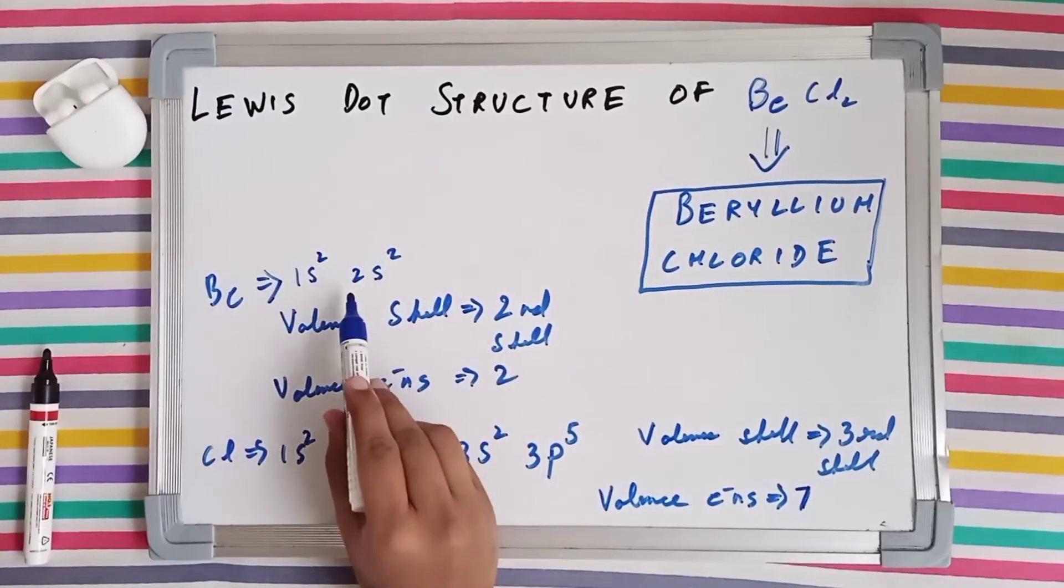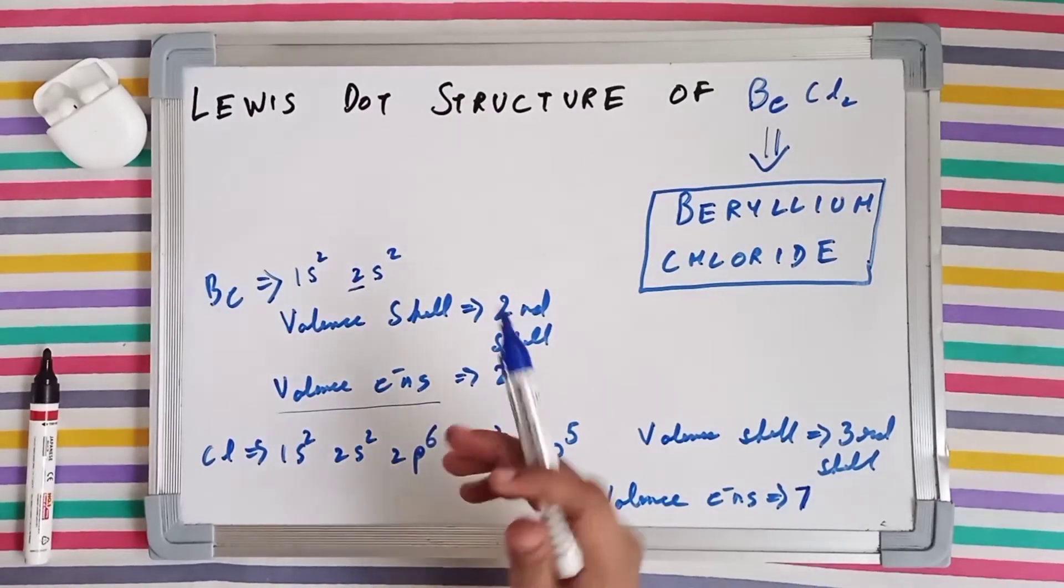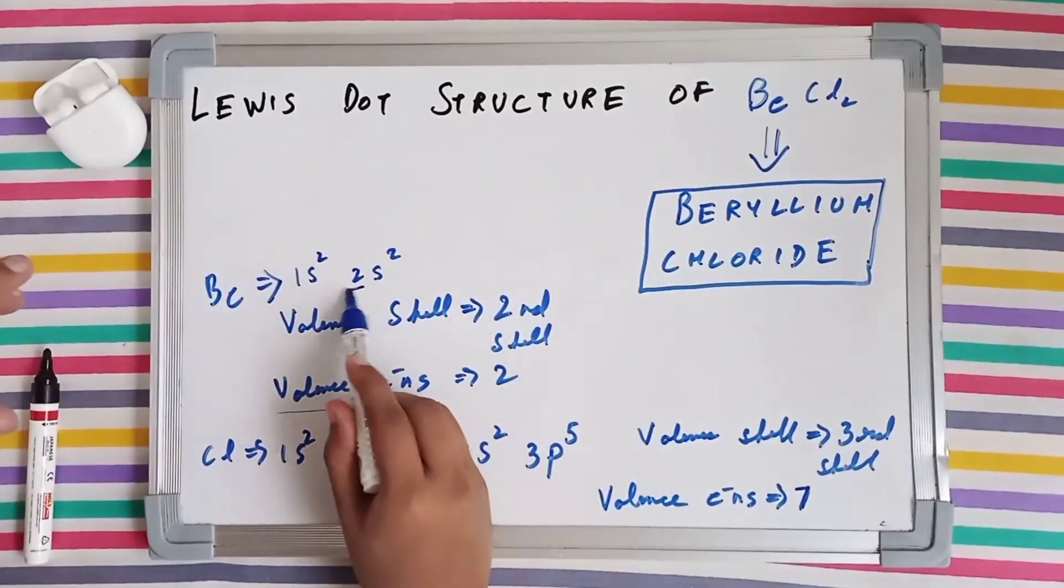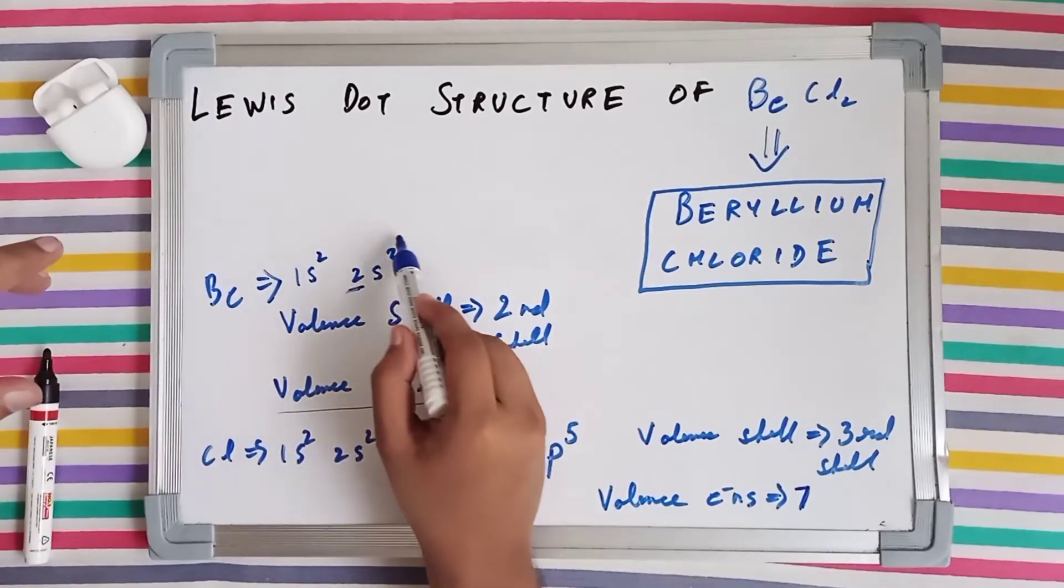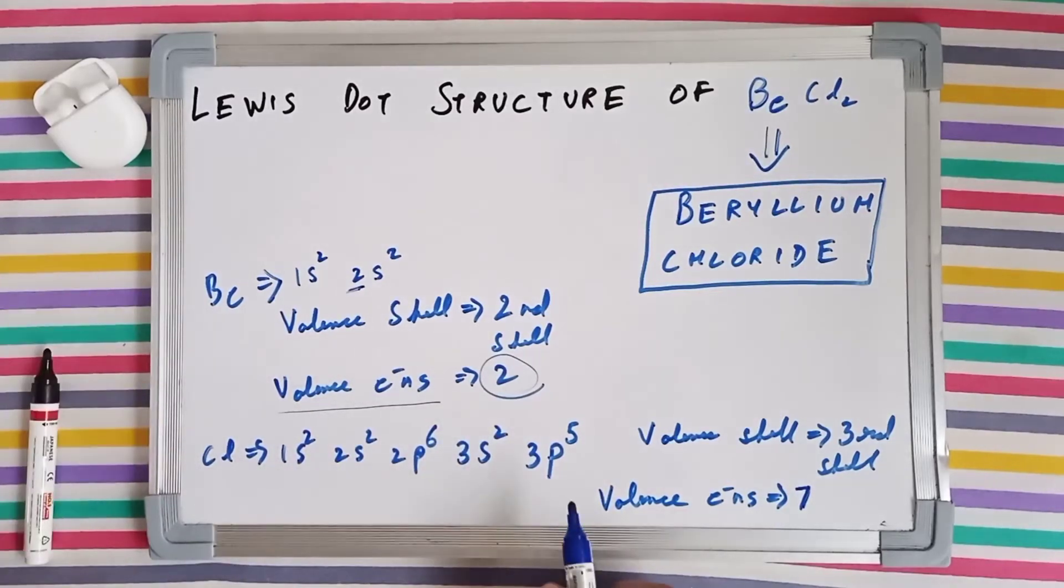So I have written here its valence shell is the second shell. And the number of valence electrons are those electrons which are present in the valence shell. So the valence shell is the second shell and the number of electrons is 2 in the second shell. So we have got 2 valence electrons.